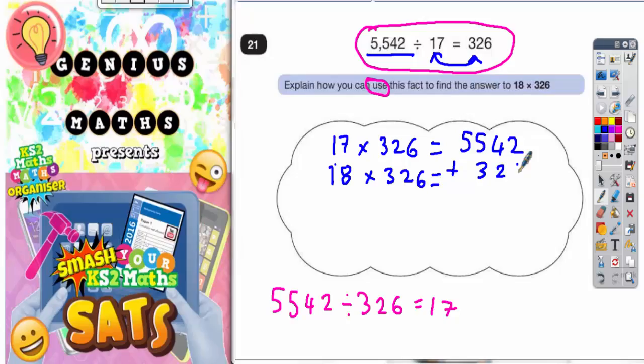So, we can use a column method and just add on 326. So, 2 plus 6 is 8, 4 plus 2 is 6, 5 plus 3 is 8, and 5 plus nothing is 5.